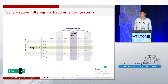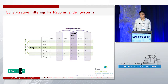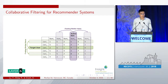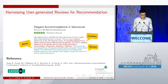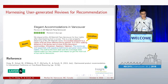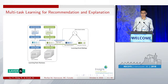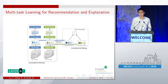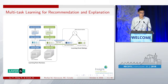For a long time recommender systems were about ratings and collaborative filtering. Later, people started to be more interested in content and metadata, and more recently people turned their attention to the plentiful supply of user-generated reviews. Noisy though they are, we have seen remarkable successes in recent years applying user-generated reviews for recommendation. Today we're going to focus on user-generated reviews as a primary source of recommendation data.